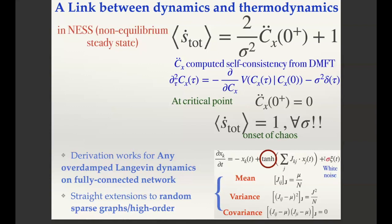Does this link to the Kolmogorov-Sinai entropy, which tells you about predictability of the future? Not directly, but you can look at the formula the other way around: if you know the entropy production, you can also infer the autocorrelation function, and thereby predict something about the future dynamical state.